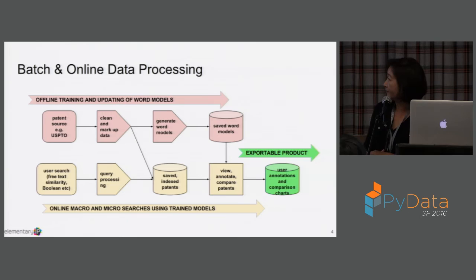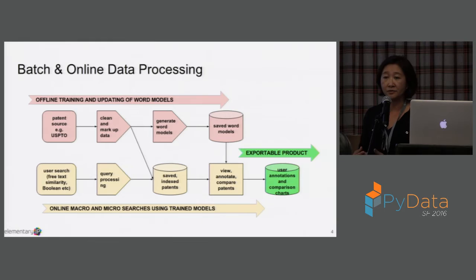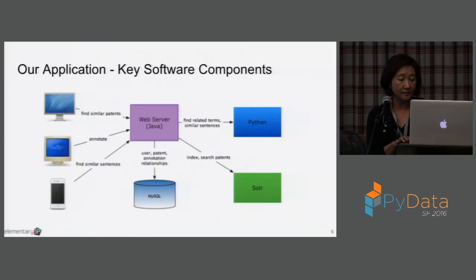The real-time application at the bottom is the yellow part. After we create a model, we have an online application where people can log in, do their patent search, save their patents, and we also have a productivity tool to allow people to do analysis and do annotations on the patent and come back later. Finally, the goal is to allow them to export what their findings are.